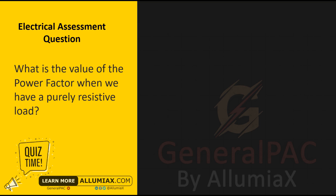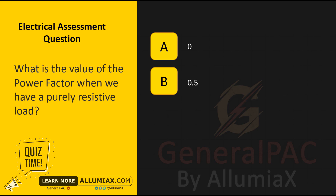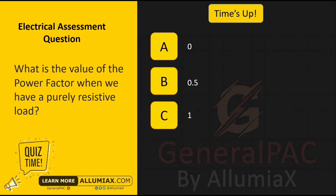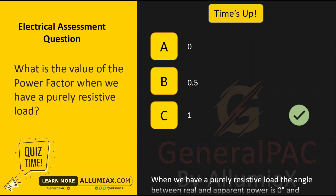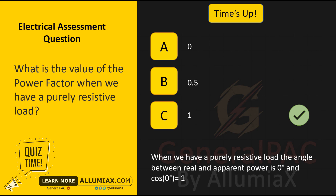What is the value of the power factor when we have a purely resistive load? A: Zero, B: 0.5, C: One. Time's up. The answer is C: One. When we have a purely resistive load, the angle between the real and apparent power is zero degrees, and cosine of zero equals one.